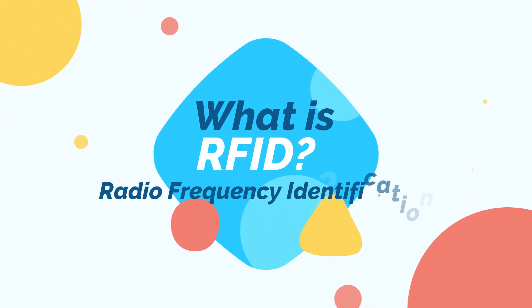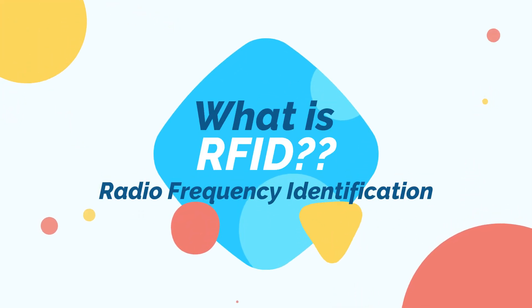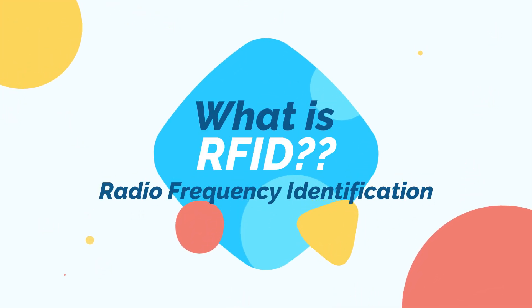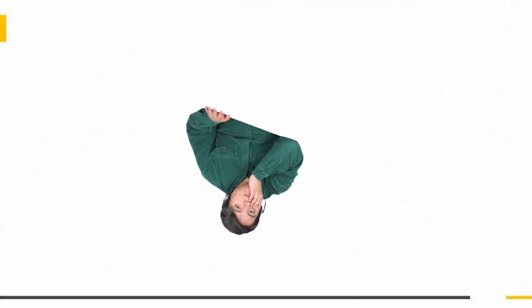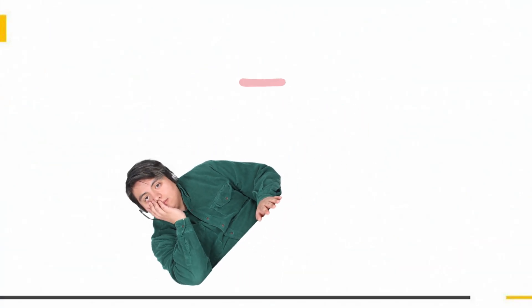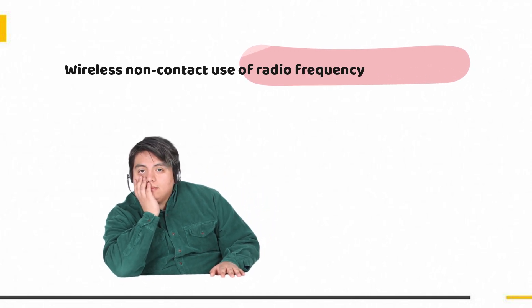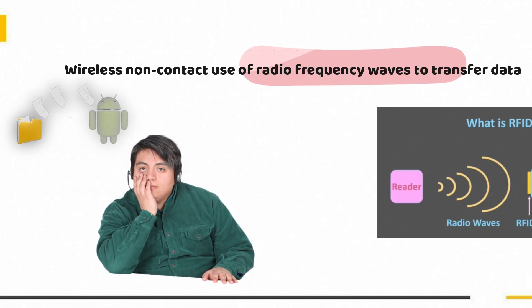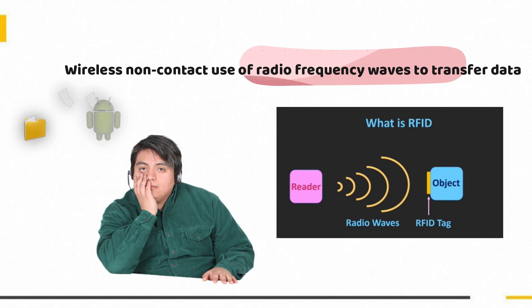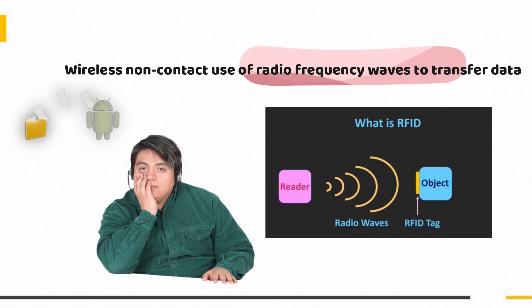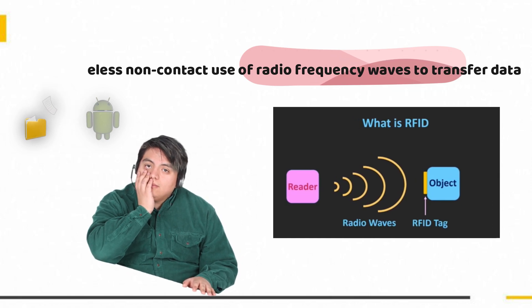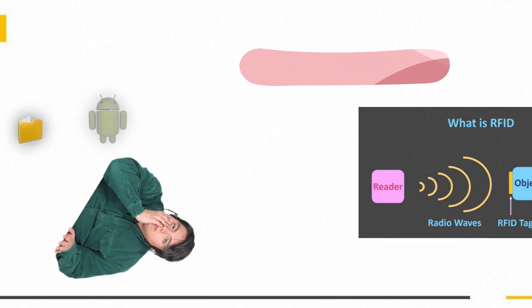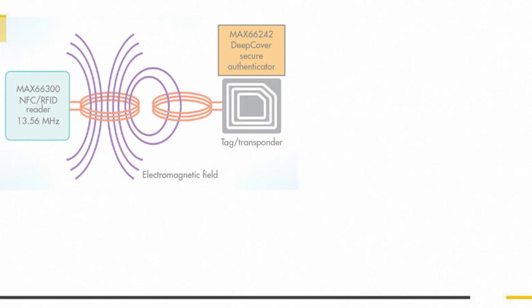In this video we will see about RFID, which is also known as radio frequency identification. RFID is the wireless non-contact use of radio frequency waves to transfer data. Tagging items with RFID tags allows users to automatically and uniquely identify and track inventory and assets.